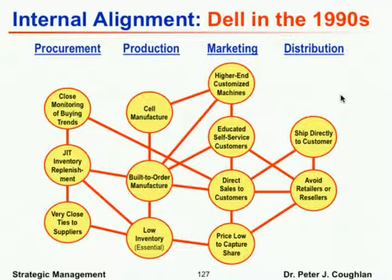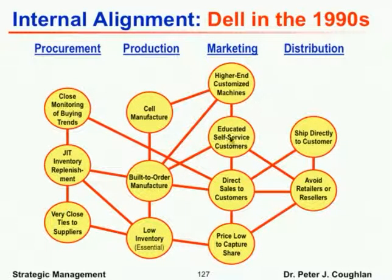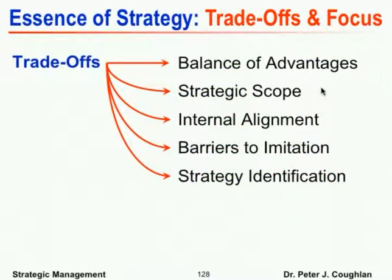The same applies to Dell. We constructed Dell's activity system, noting that different activity choices involve tradeoffs. You wouldn't want to build stock manufacturing if you had direct sales of higher-end machines. The tradeoffs among activities within the activity system highlight the importance of internal alignment. So tradeoffs are at the core of balance of advantages, strategic scope, and internal alignment.